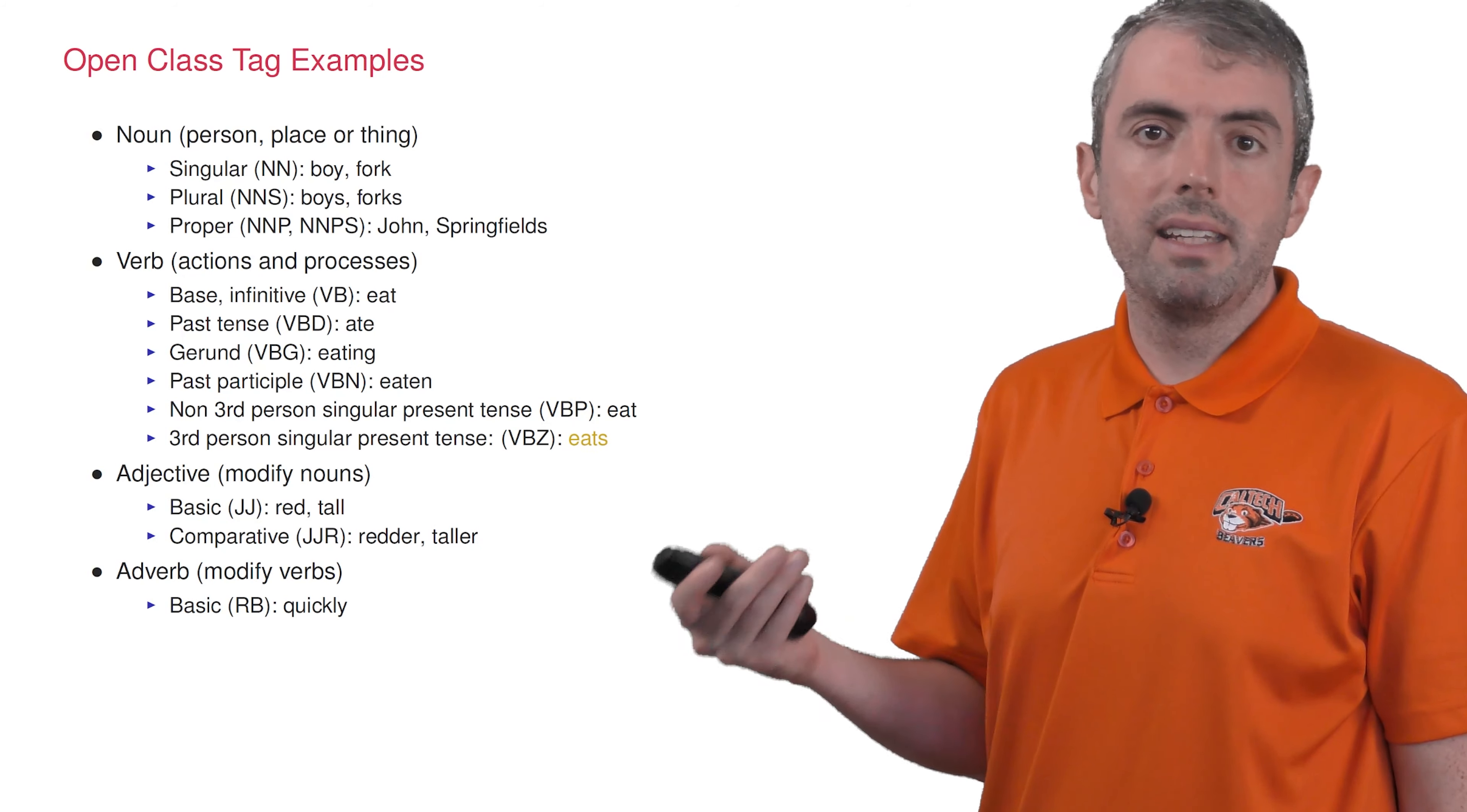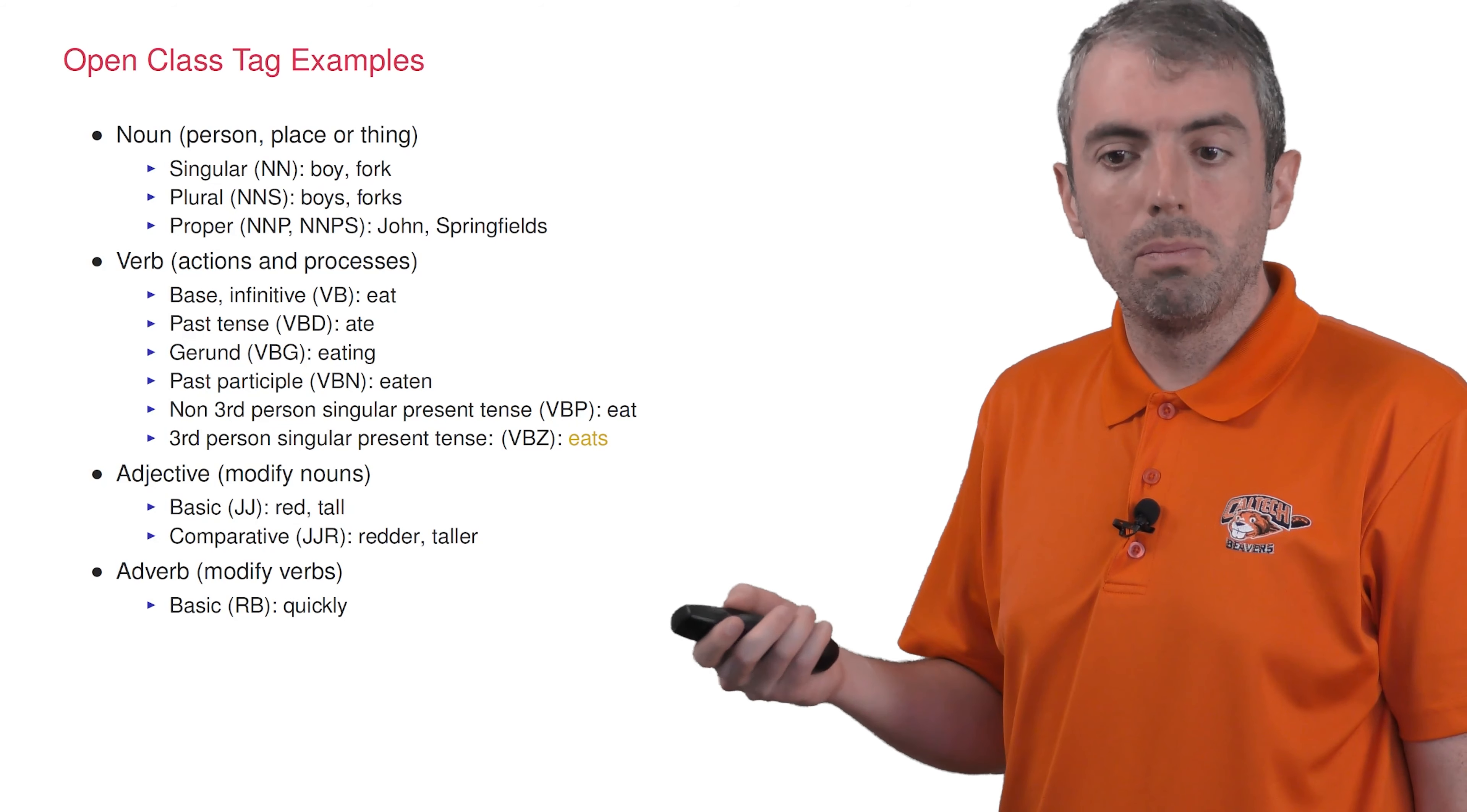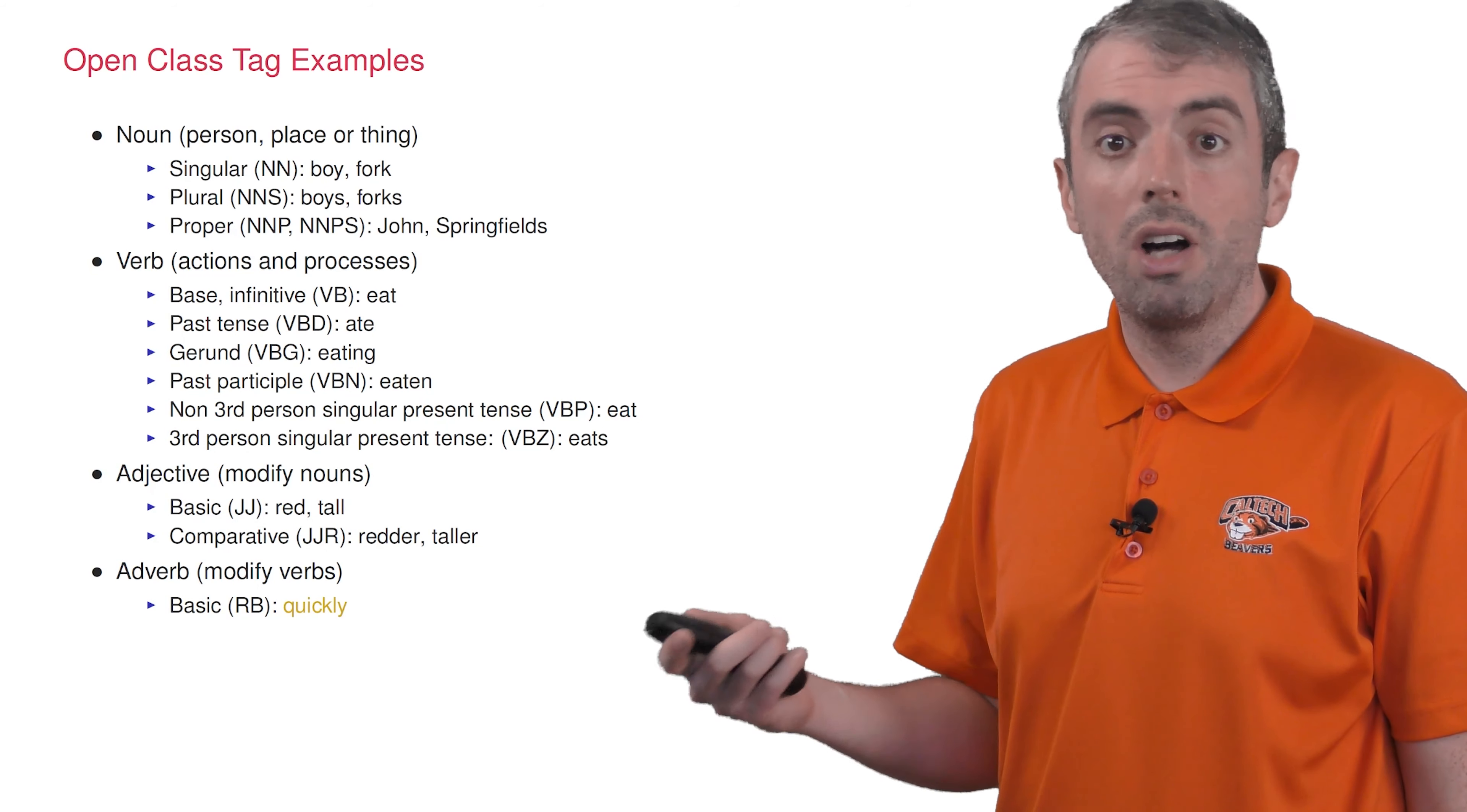Verbs, parts of speech distinguish when and how many people are doing something. A third-person singular present tense verb, he eats, tells you that one thing is eating now. But a first-person plural verb, we ate, says that multiple people ate in the past. Adjectives modify nouns and adverbs modify verbs. Comparative adjectives tell you that something is redder than something else. But adverbs can tell you that I talked quickly.